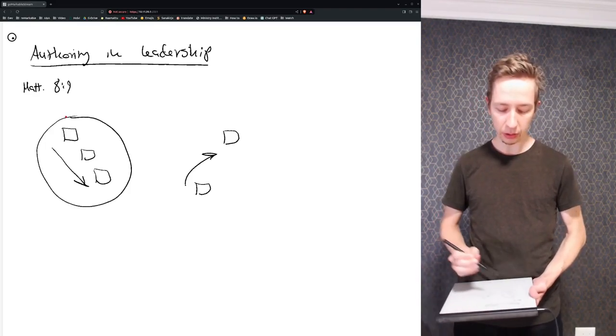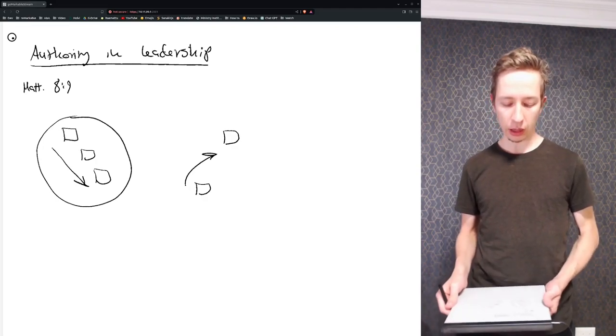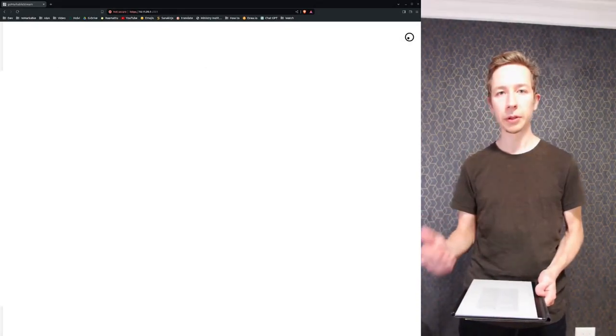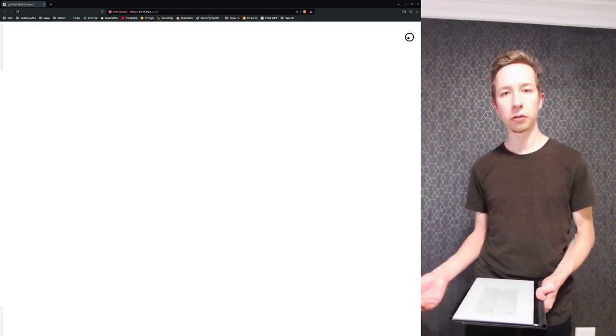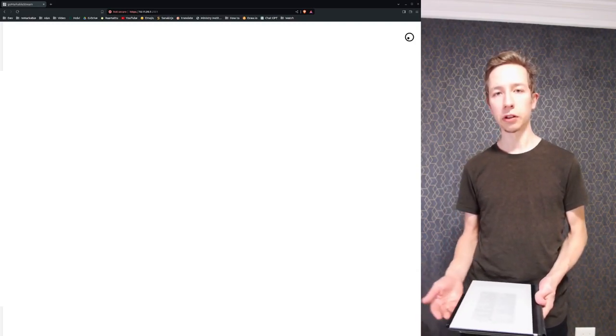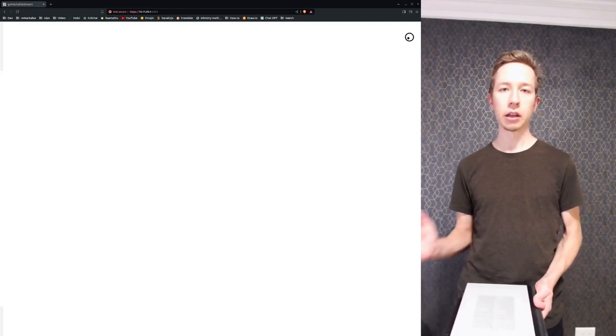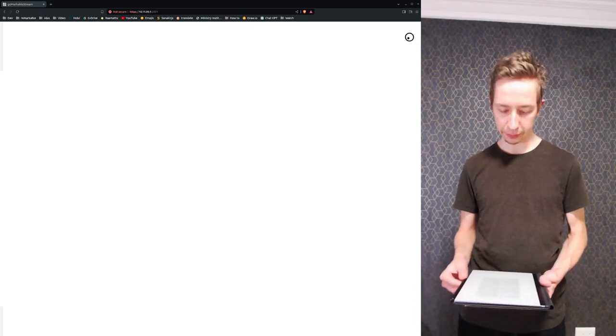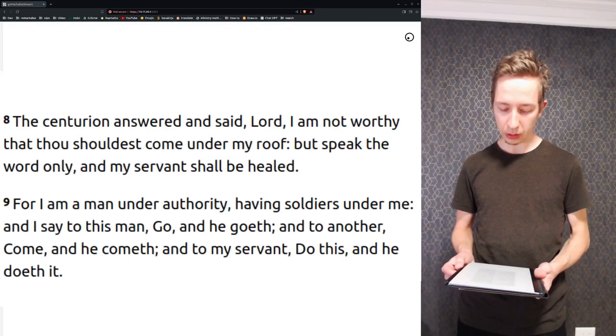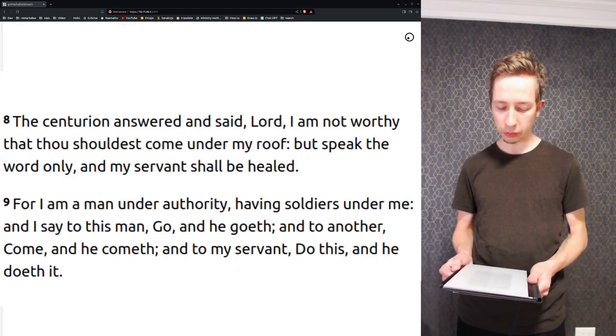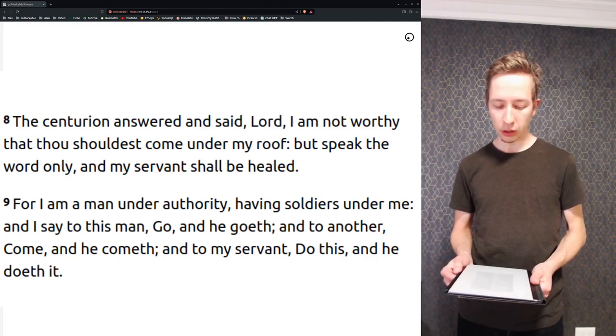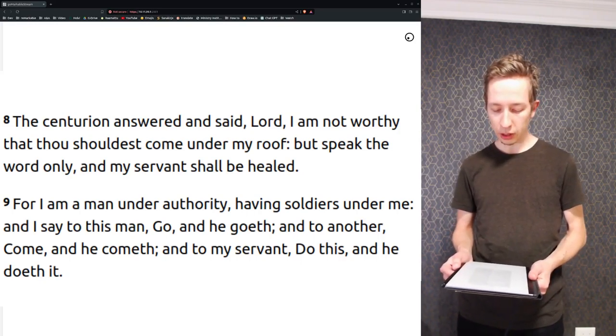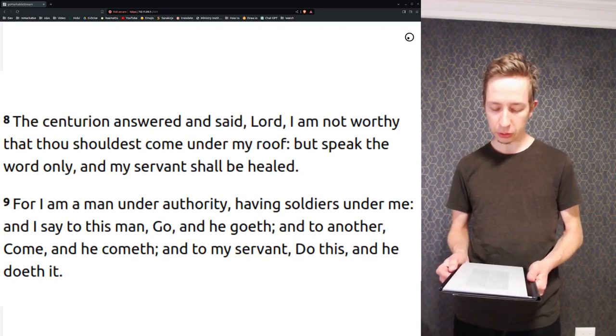So today we'll be probably focusing more on this one here, and I wanted to start with the scripture, this is from Matthew chapter 8 verse 9. Jesus received notice from the Jews that there was a centurion whose servant was sick, and Jesus was going there to heal him, but the centurion sent servants with this message. The centurion answered and said, Lord, I am not worthy that thou shouldest come under my roof, but speak the word only, and my servant shall be healed. For I am a man under authority having soldiers under me, and I say to this man go and he goeth, and to another come and he cometh, and to my servant do this and he doeth it.